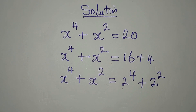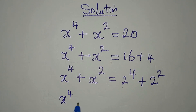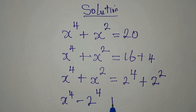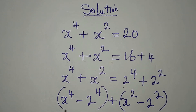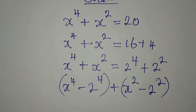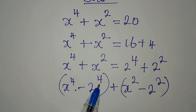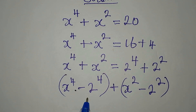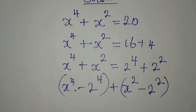But we have to solve it completely, so we cannot stop at this point. I am going to bring x to the power of 4 and 2 to the power of 4 together, so it becomes negative here. Then I have plus x to the power of 2 minus 2 to the power of 2. This is a difference of two squares — or more precisely, a difference of two terms raised to the power of 4. Let's call it that way and proceed.